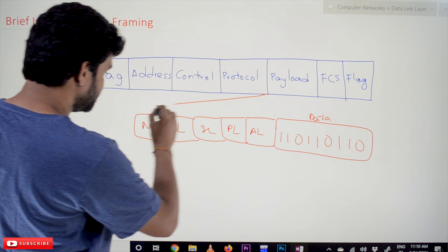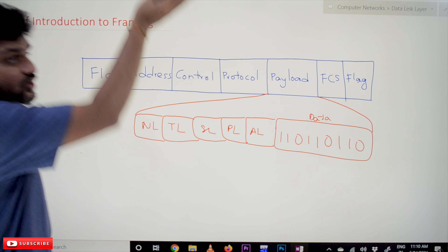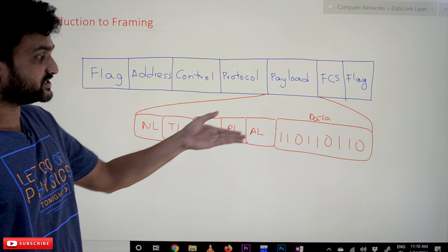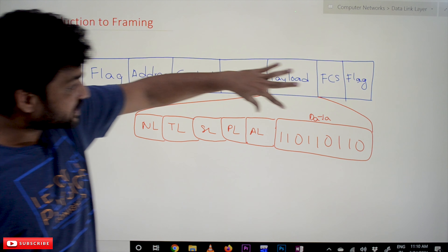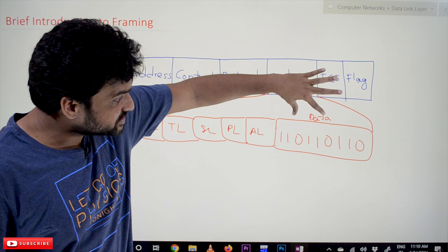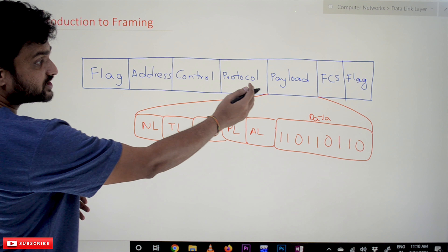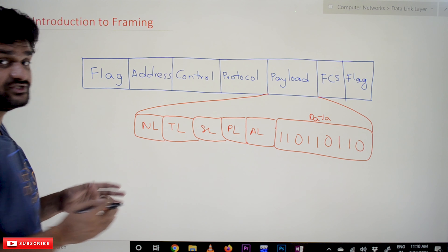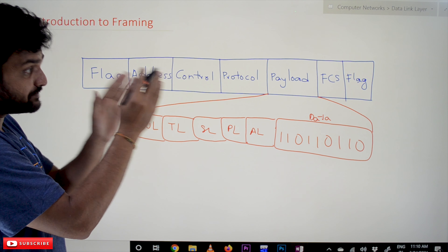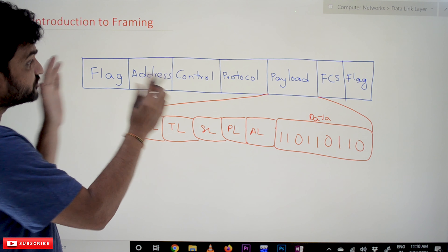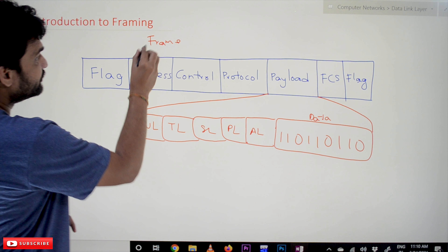This entire payload includes all the fields from the above layers — network layer, transport layer, session layer, presentation layer, and application layer — all combined with the original data. To this payload we are going to add the details of the data link layer, which we call a frame. The payload along with the data link layer fields is what we call a frame.